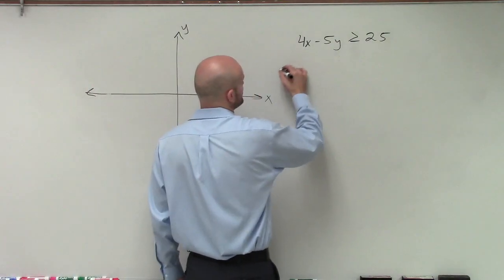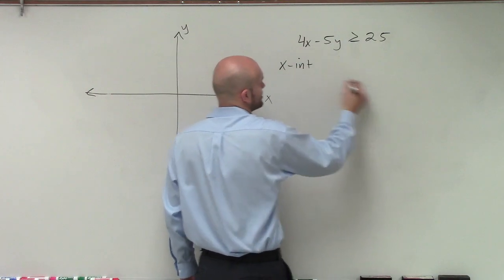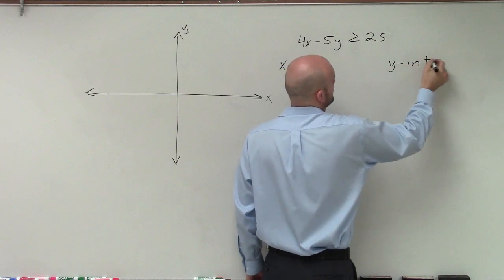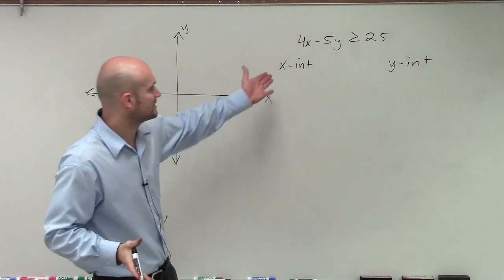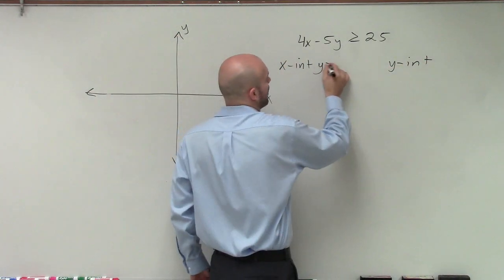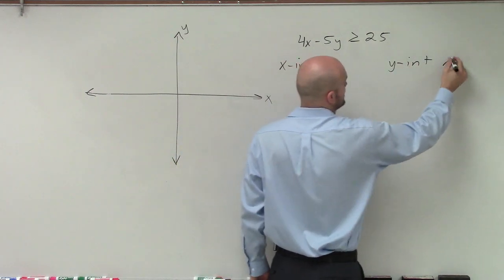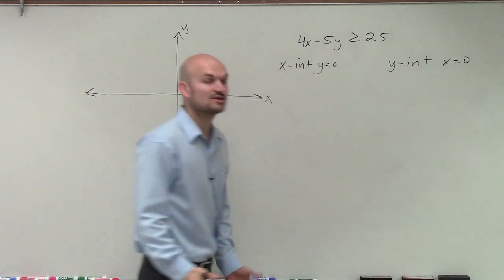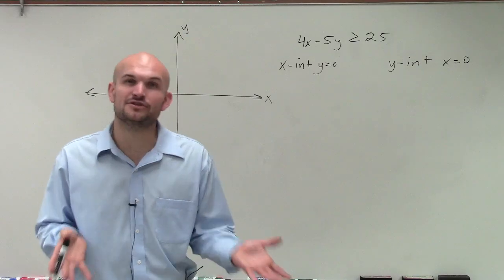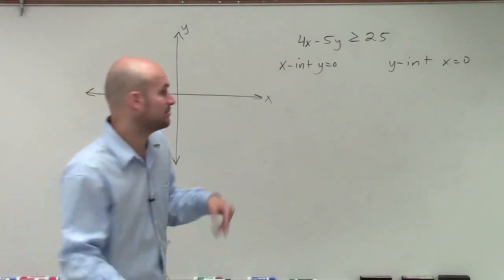So what I'm going to do is I'm going to find the x-intercept and the y-intercept. And what I'm going to do is when I notice that with the x-intercept is when y equals 0, and the y-intercept is when x equals 0. So then to find each intercept, all I need to do is plug in 0 for the other variable.